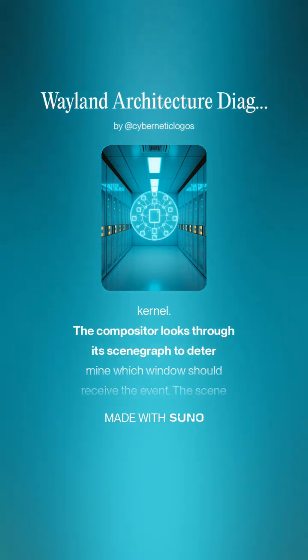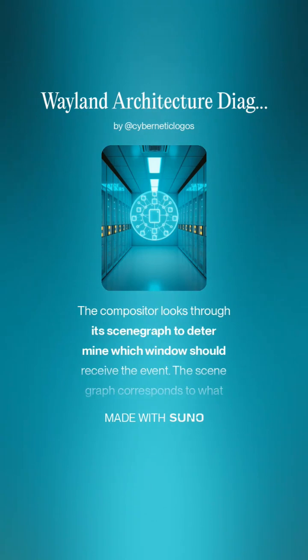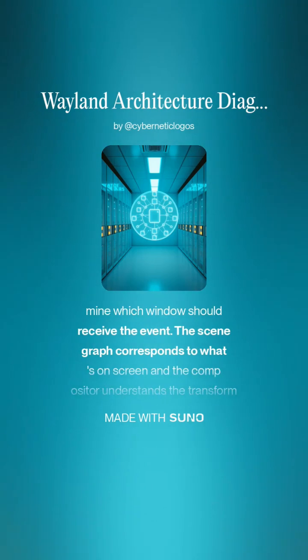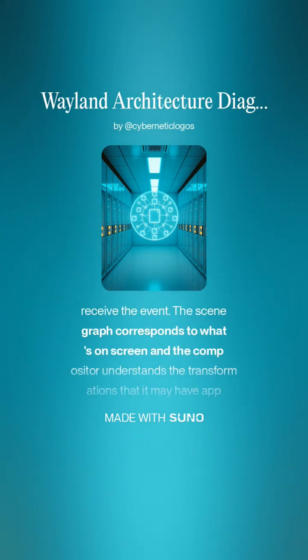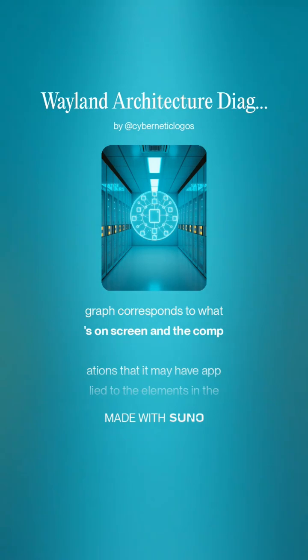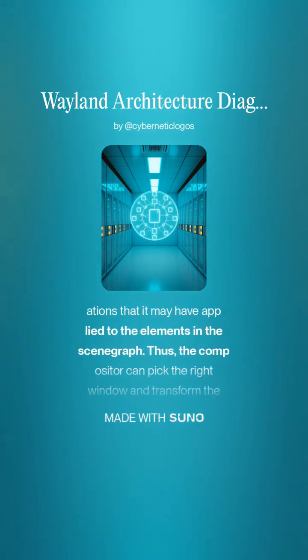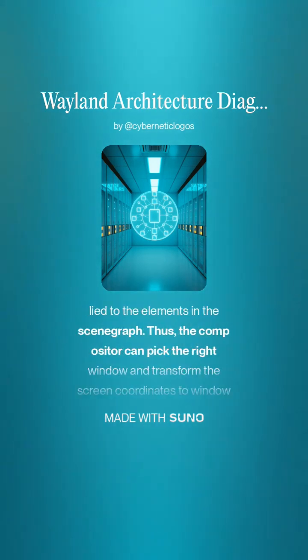The compositor looks through its scene graph to determine which window should receive the event. The scene graph corresponds to what's on screen, and the compositor understands the transformations that it may have applied to the elements in the scene graph.